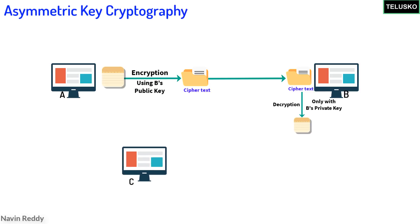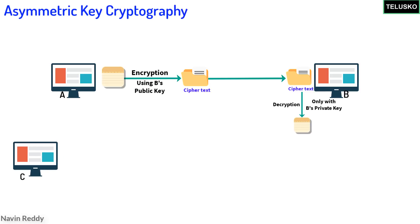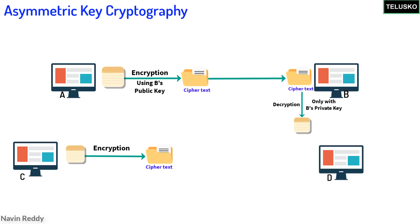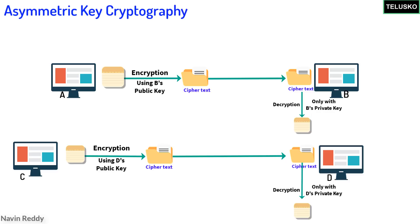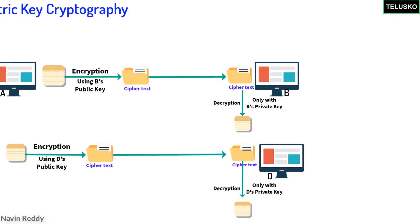Let's do another example. If C wants to send a message to D, C will use D's public key to encrypt the message, and D will decrypt the message with its own private key. That's how asymmetric cryptography works.